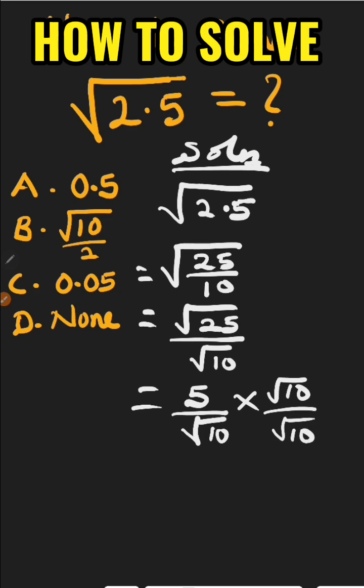5 times root 10 gives us 5 root 10 all over root 10 times root 10 gives us 10.